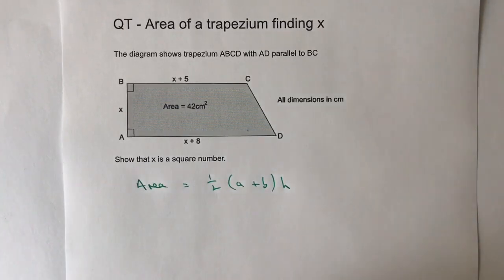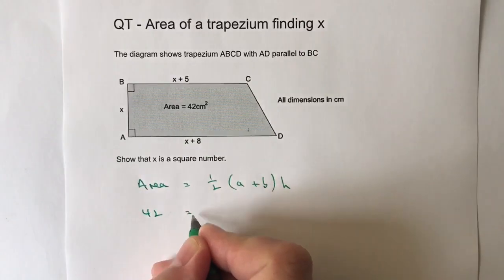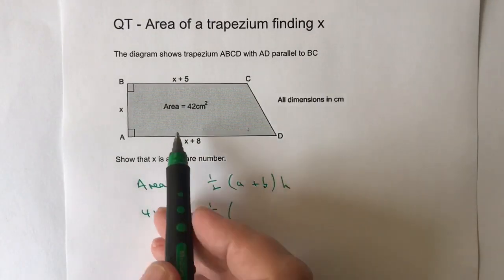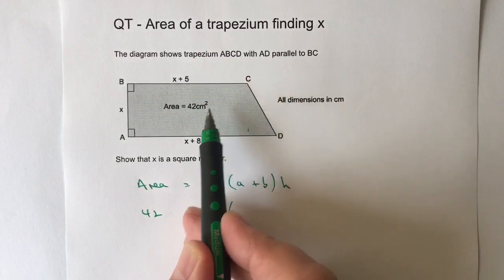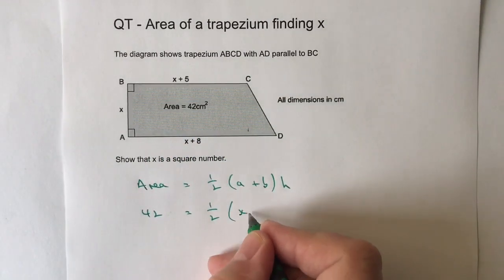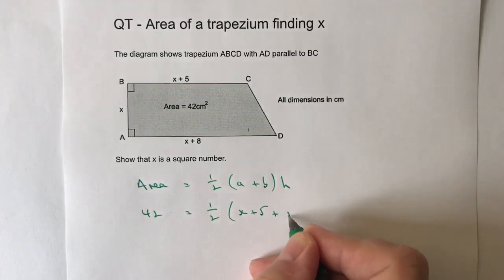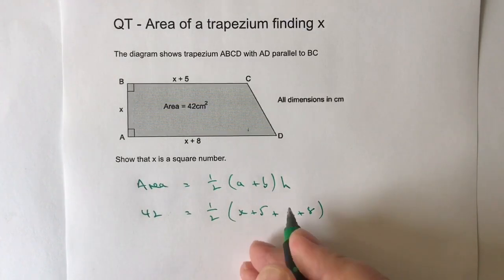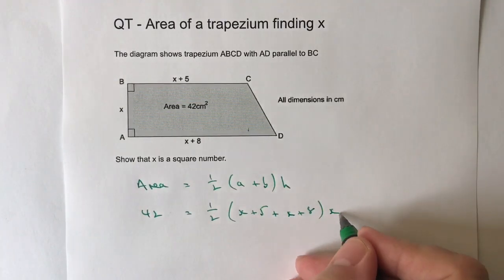So we've got the area is 42 which is great. We've got a half, and then a is this dimension along here and b is this dimension. So we've got a plus b. So we've got x plus 5 plus x plus 8. h is the height which is x.